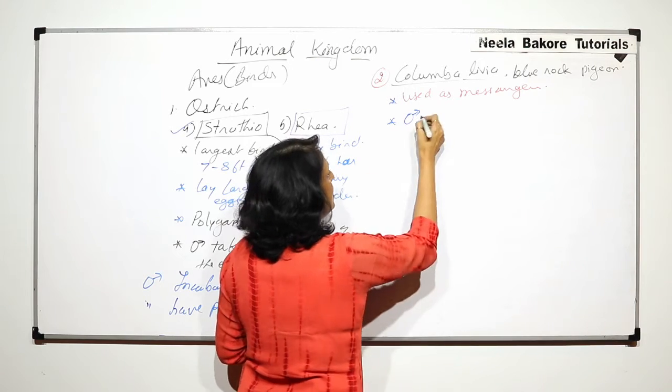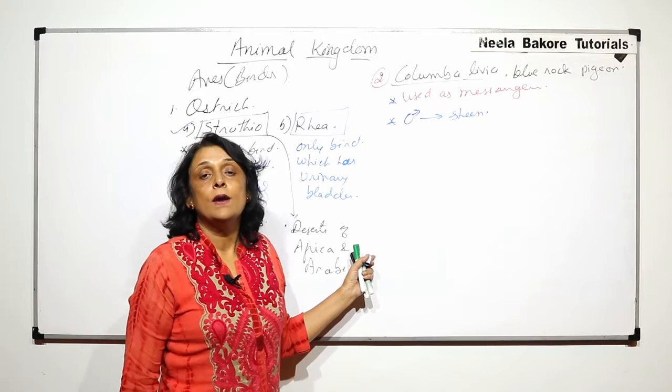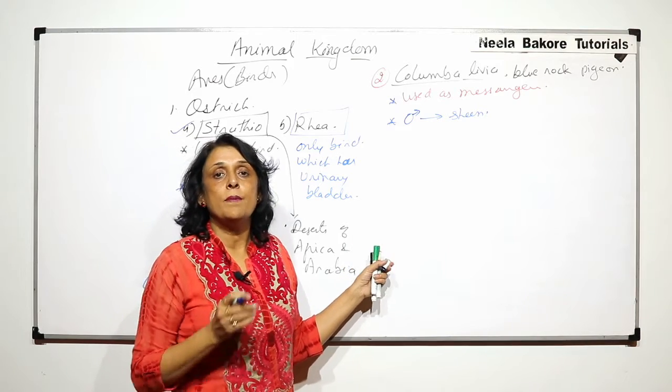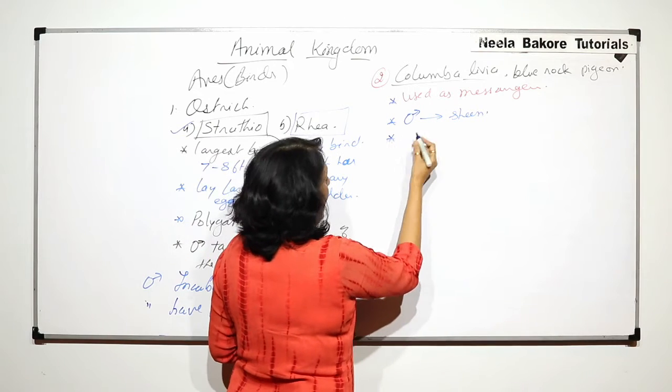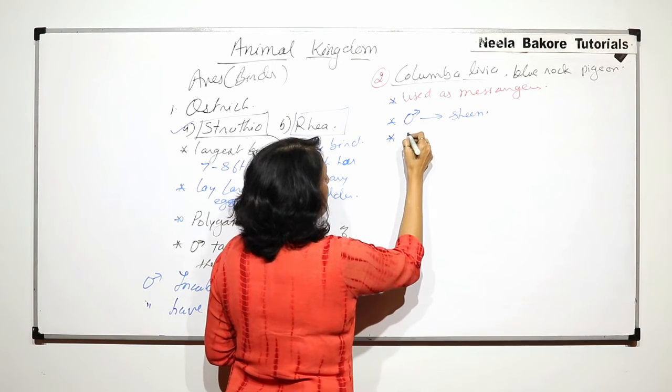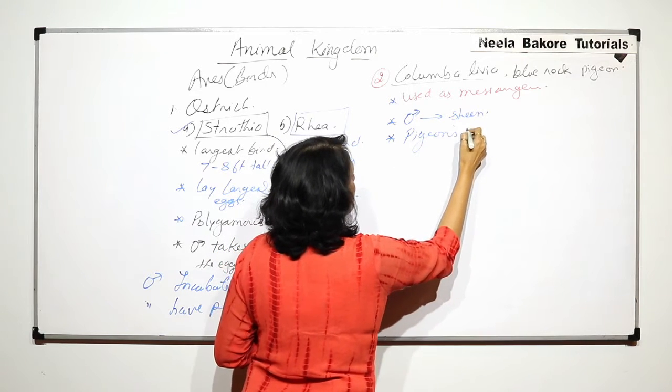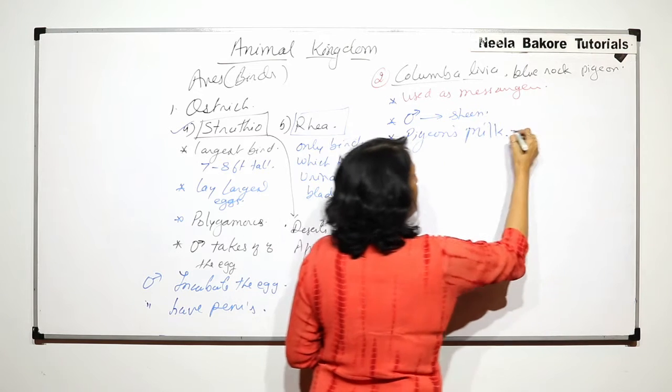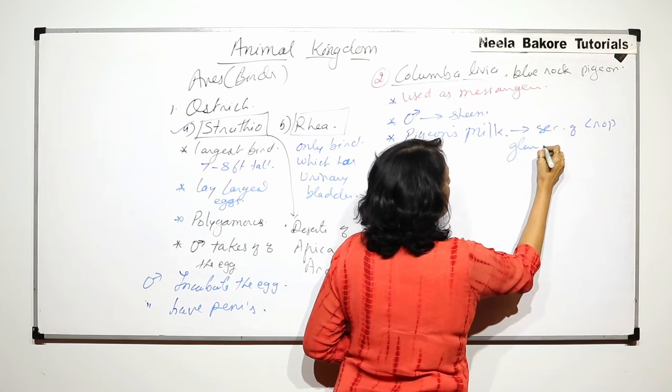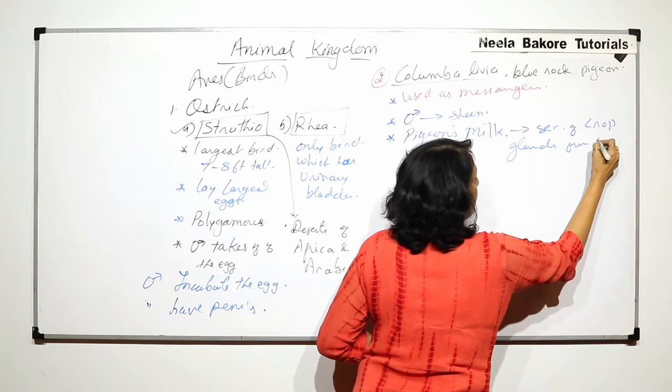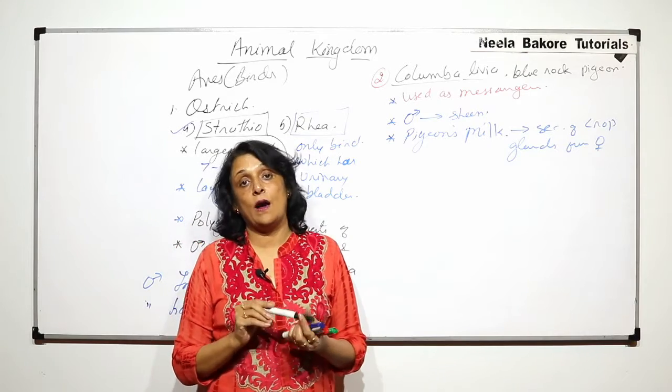One more thing which is special about the pigeons is that the male birds, they have a sheen. There is a shiny thing on their body because in animal kingdom, it is normally the male which is more attractive. And the next important thing is they produce a secretion which is known as pigeon's milk. It is a secretion of crop glands from the female bird and this is used to feed the young ones.